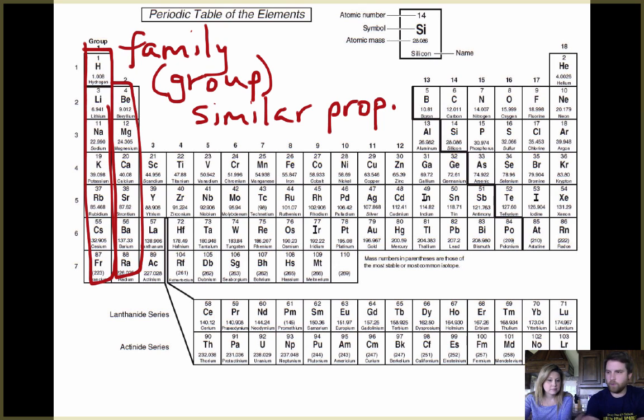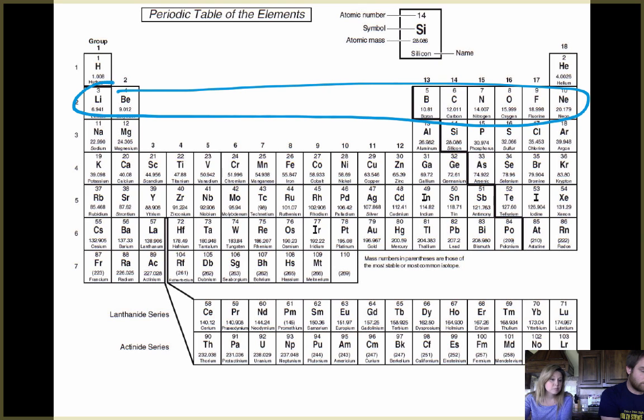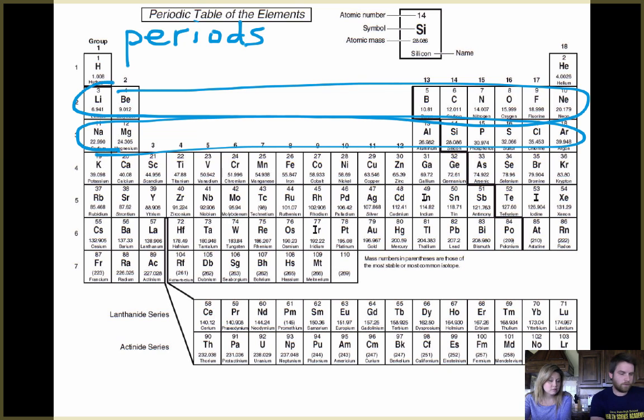All right, so what about the rows here? What are these rows? So we call the rows periods. Okay, so they're called periods and remember that it goes across from left to right by increasing atomic number, so increasing number of protons. Okay, so increasing atomic number as we move left to right. Yeah, so periods, families or groups, periods, families or groups, that's it. Great.